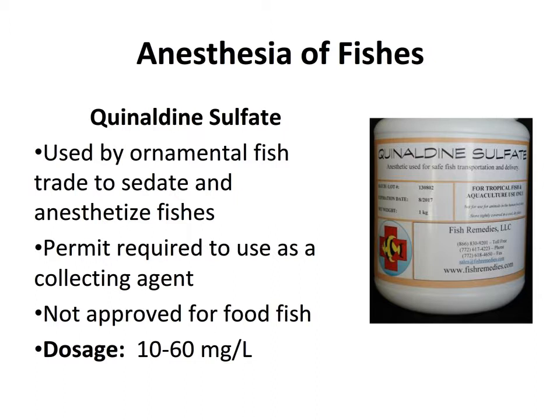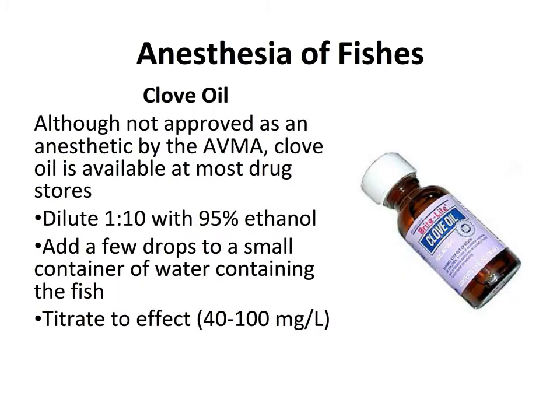Another anesthetic sometimes used in fisheries biology is quinidine sulfate. It dissolves readily in water and is used commonly by ornamental fish traders, sometimes even to collect fish — though you need a state permit to use any anesthetic in the water to collect fish, and permits tend not to be granted anymore. It's not approved for use in food fishes and not commonly used in the veterinary clinic. The dosage varies widely among species, usually around 10 to 60 milligrams per liter.